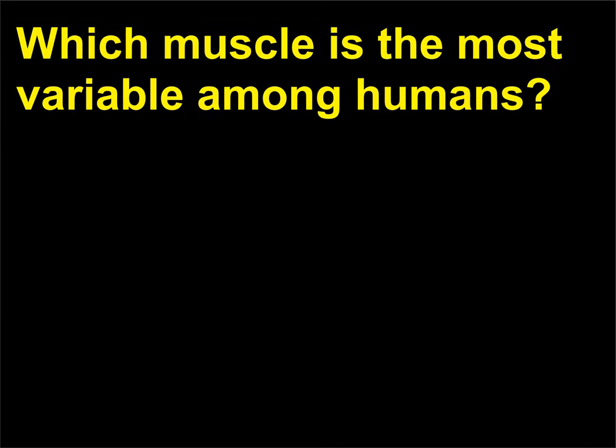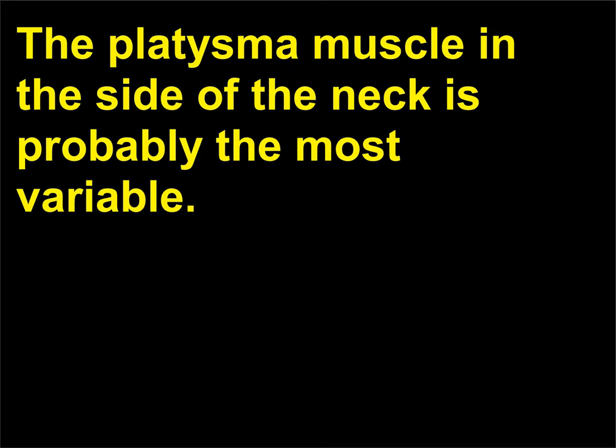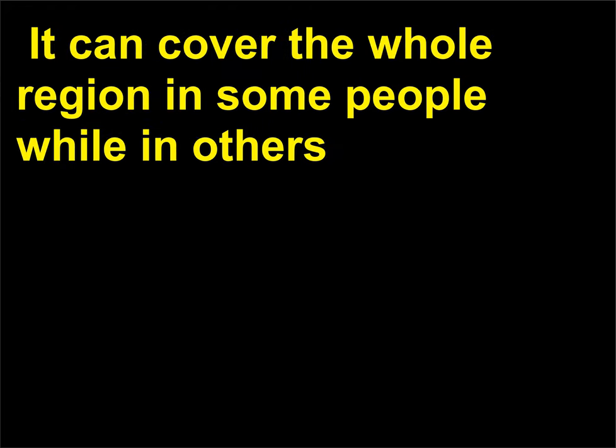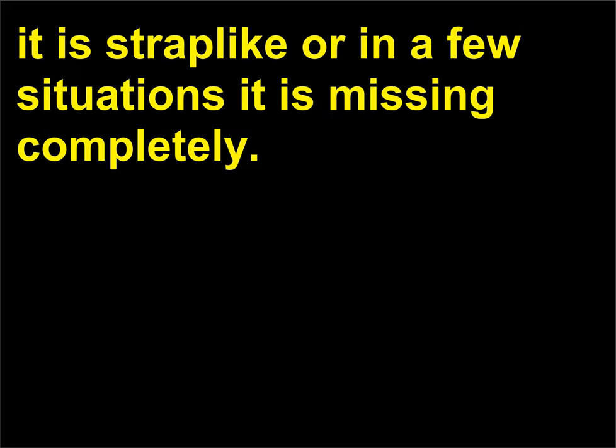Which muscle is the most variable among humans? The platysma muscle in the side of the neck is probably the most variable. It can cover the whole region in some people, while in others it is strap-like, or in a few situations it is missing completely.